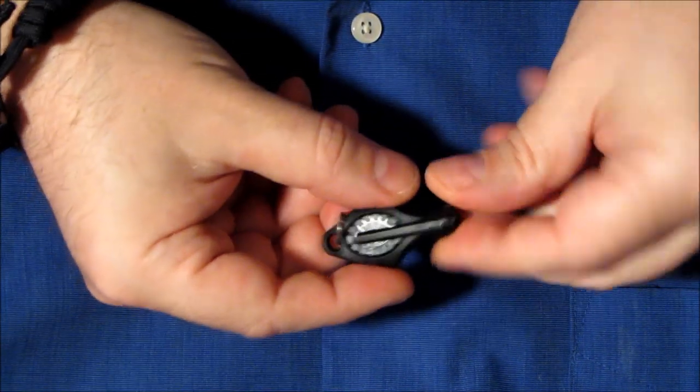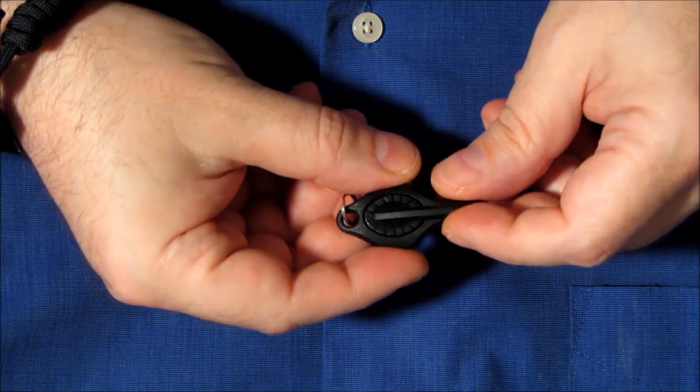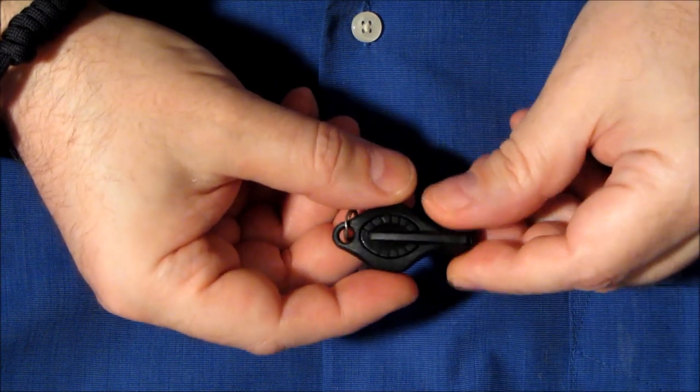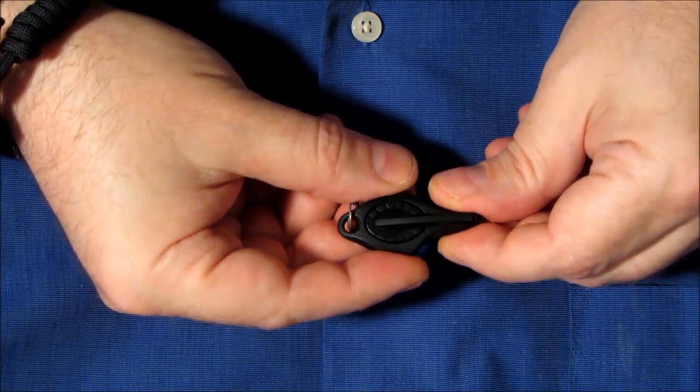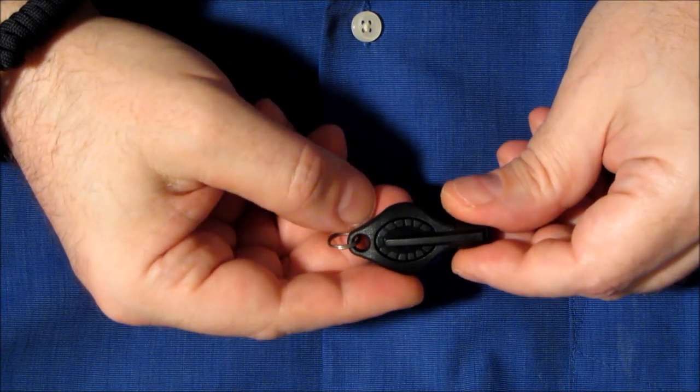This serves many functions. One is as a pocket clip, so you can attach it to your pocket, your shirt pocket as you're working on equipment, much like a doctor would pull a pen light out of their shirt pocket. It gives you sort of a quick immediate access to your light for day-to-day tasks.